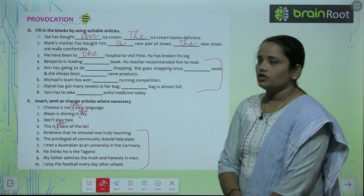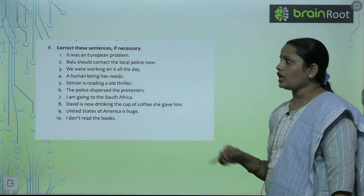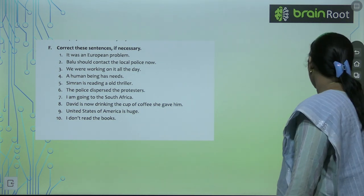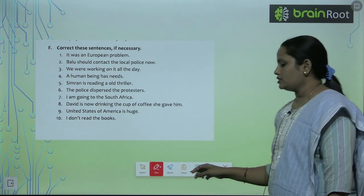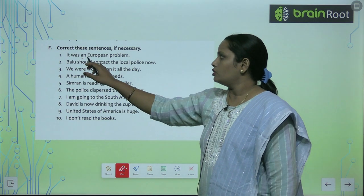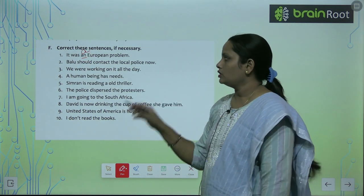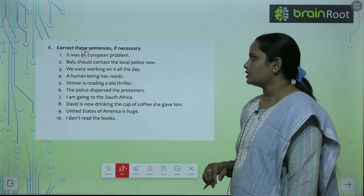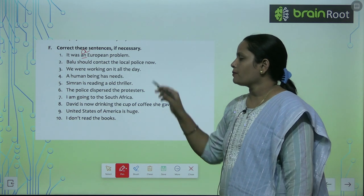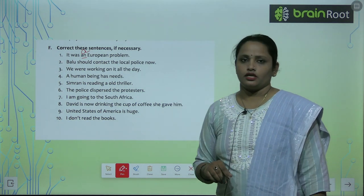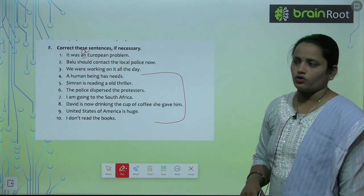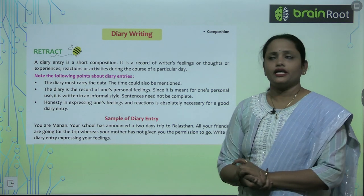Exercise F: Correct sentences if necessary by inserting articles wherever required. 'It was a European problem' — a European problem is correct. 'Baloo should contact the local police now' — no correction required. 'We were working on it all the day' — this is also correct. Make necessary changes wherever required.